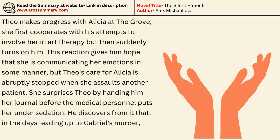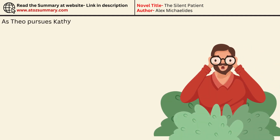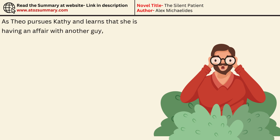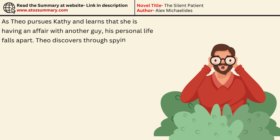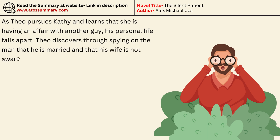He discovers from the journal that in the days leading up to Gabriel's murder, Alicia was being followed. Meanwhile, as Theo pursues Kathy and learns that she is having an affair with another man, his personal life falls apart. Theo discovers through spying on the man that he is married and that his wife is not aware of the affair.